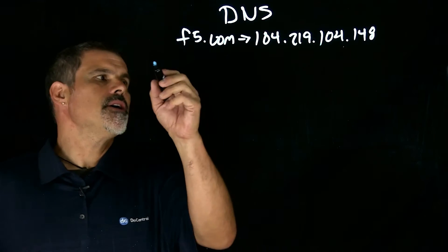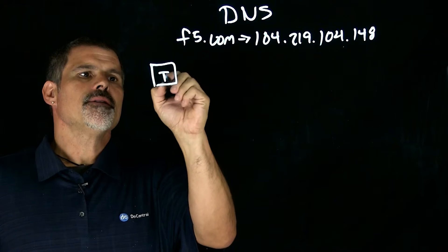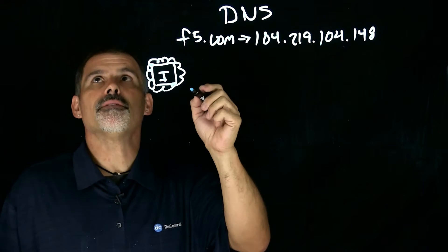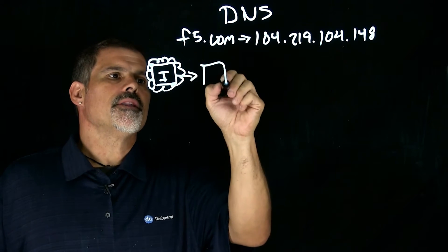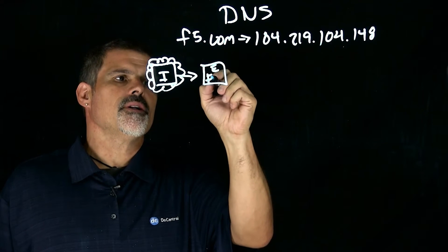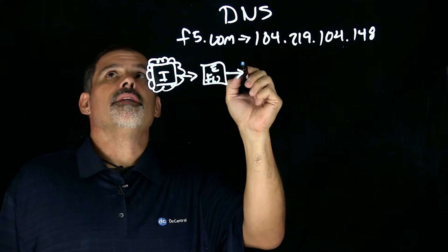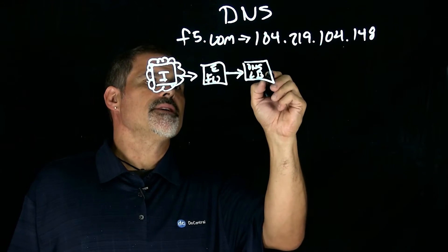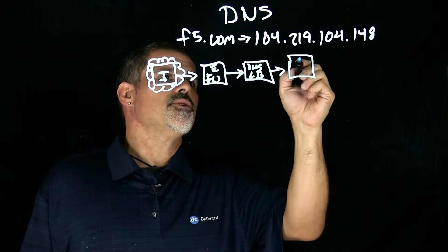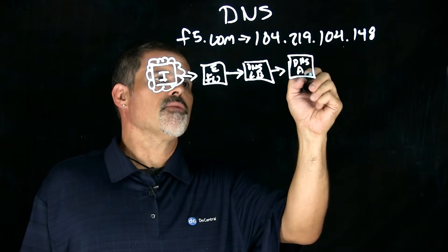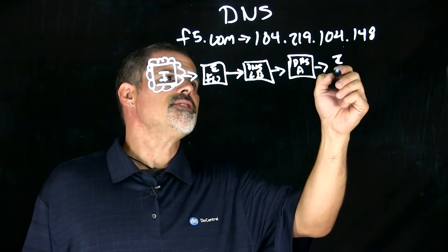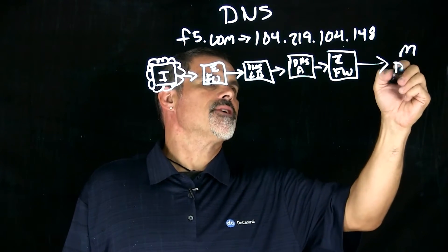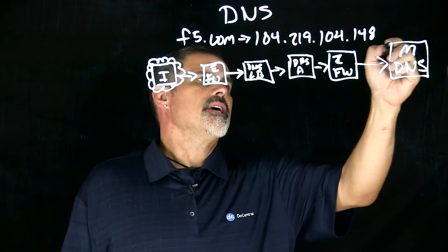Let's draw this out. Here is the big bad internet — we used to make the internet a cloud, but since cloud took over, that's no longer available. Then we go to your external firewall, then to a DNS load balancer, then to your DNS array, probably then an internal firewall, and then we get to the master DNS infrastructure.